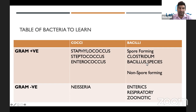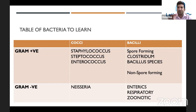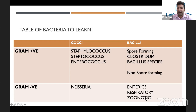Bacillus species include bacillus anthracis (anthrax), or non-spore-forming organisms such as Listeria or Diphtheria. Gram-negative bacilli include enteric organisms — E. coli, Campylobacter, Salmonella, Shigella — things you get from food poisoning. Respiratory organisms like Haemophilus influenzae or Bordetella pertussis (whooping cough) — not so common in the UK because of vaccination. And then zoonotic organisms such as Pasteurella. Just remember that table of bacteria and roughly what fits into each category: gram-positive or gram-negative, cocci or bacilli.